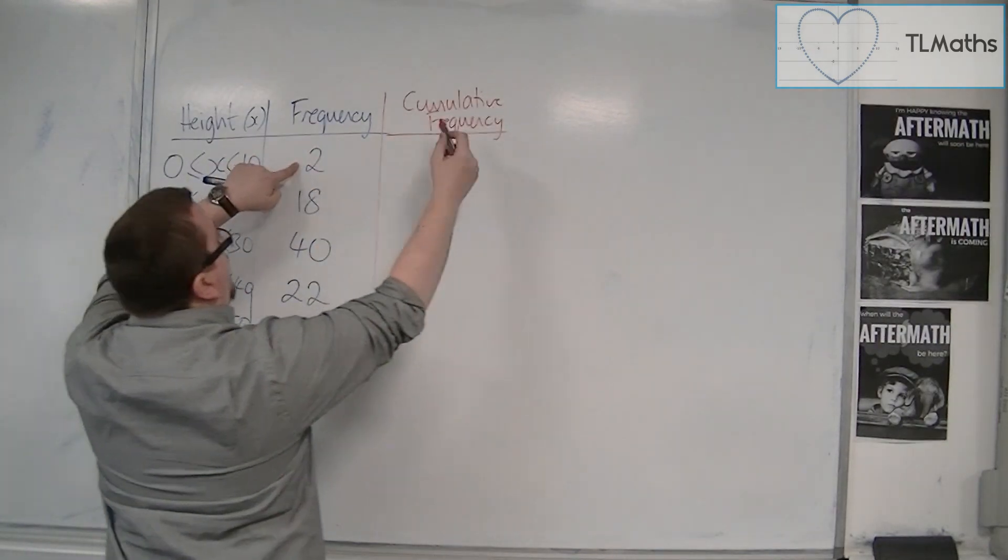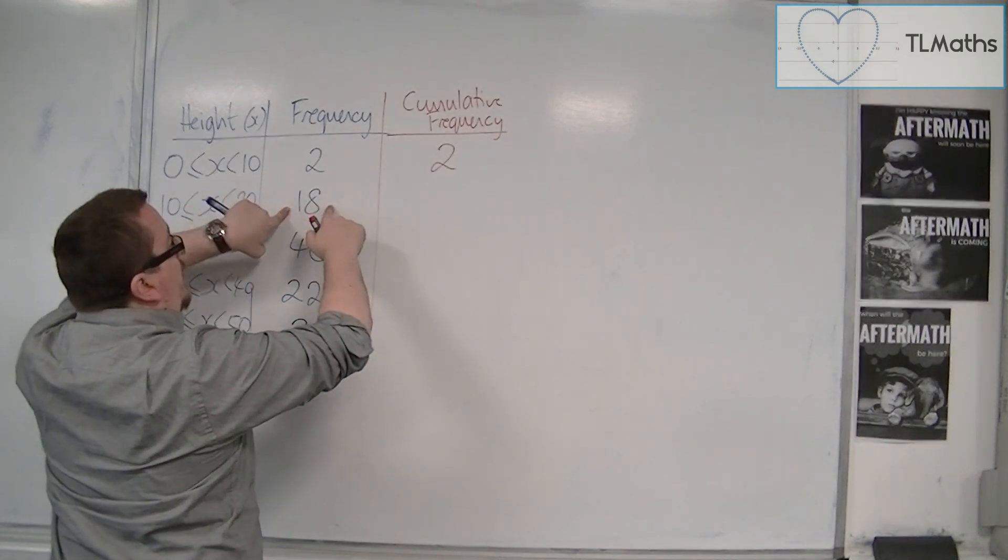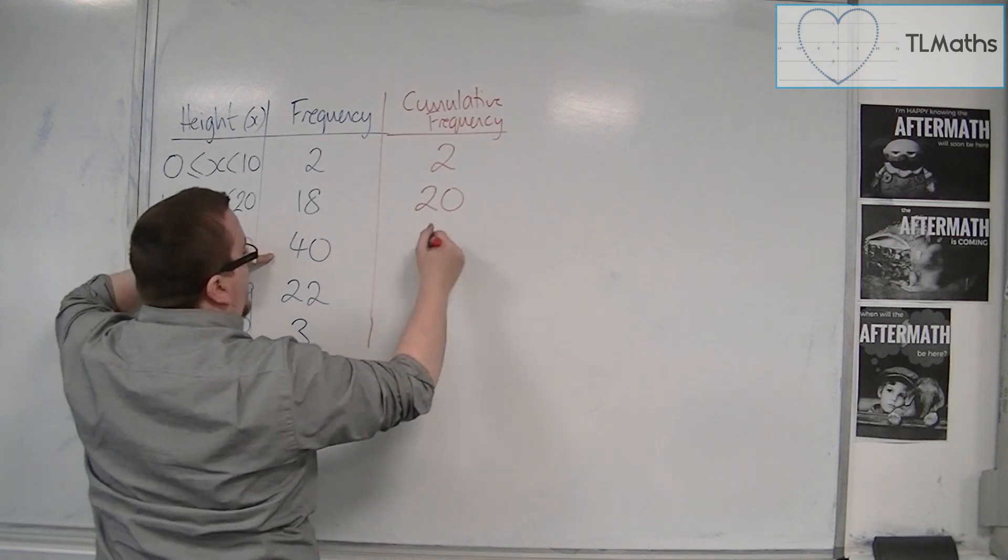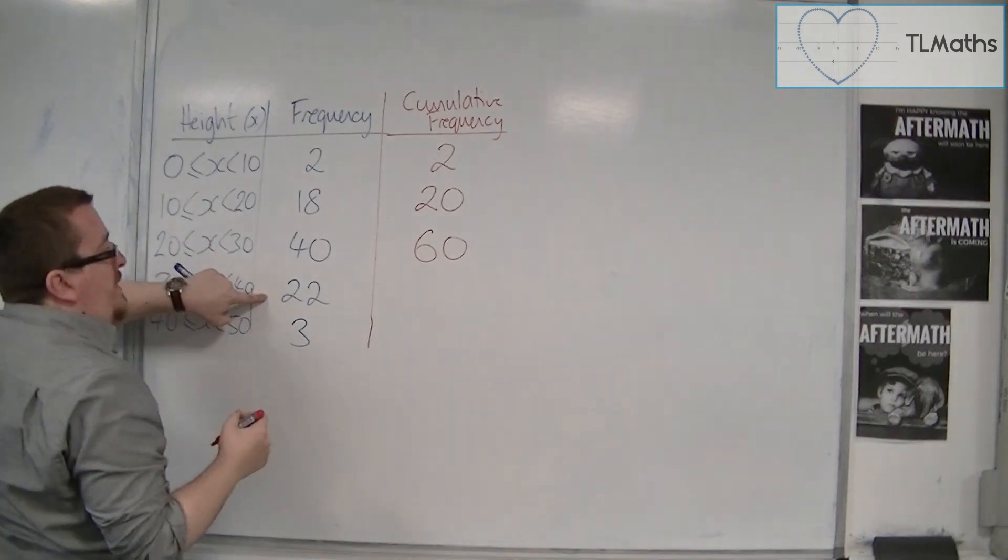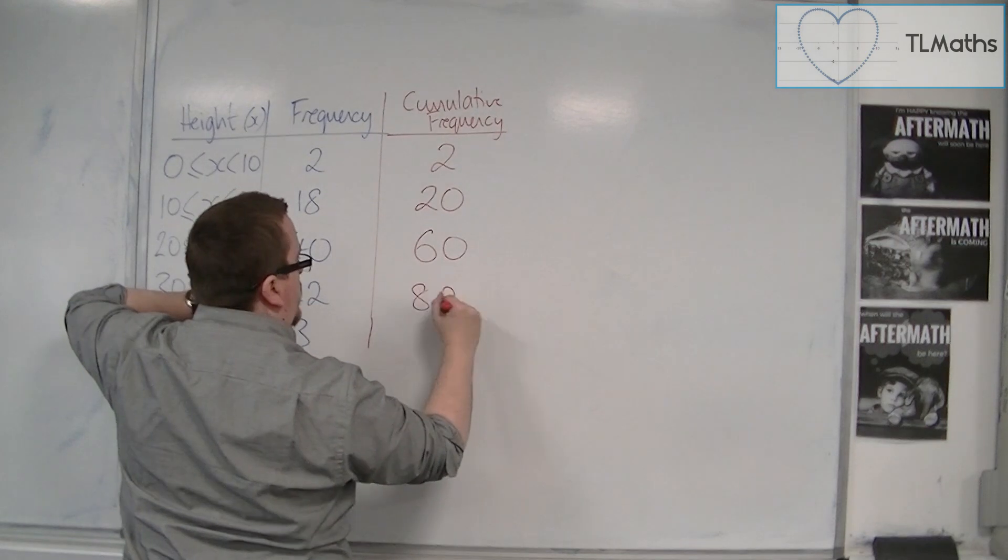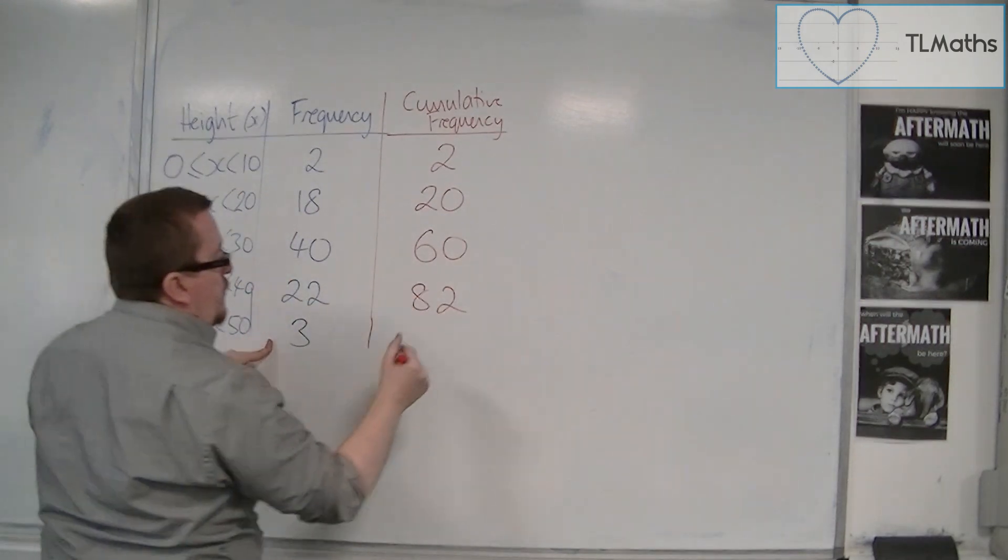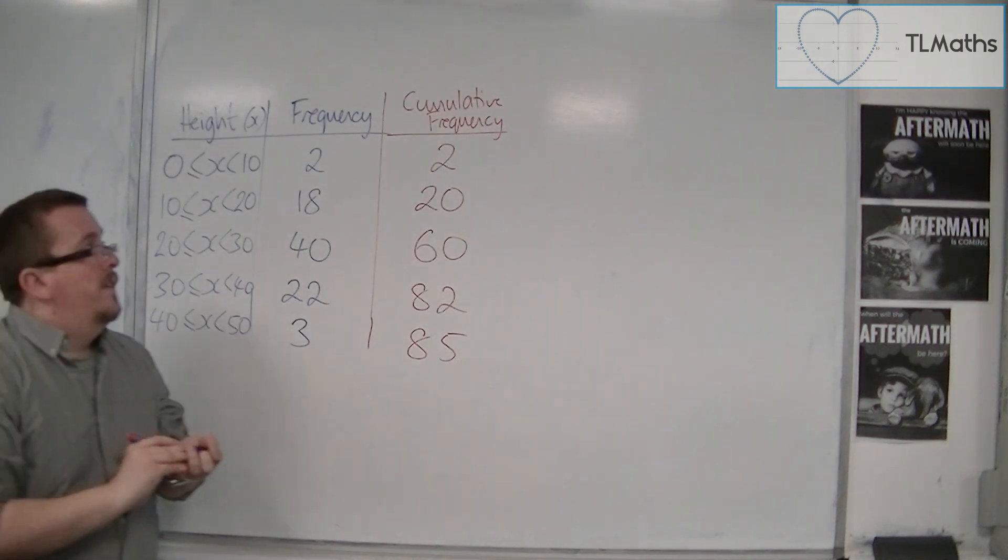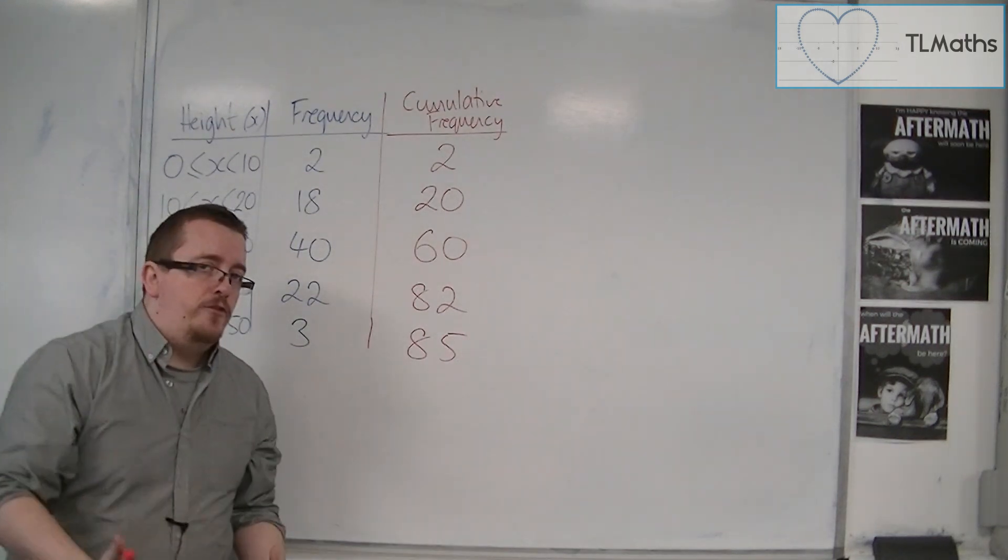You would have the 2, and then you've got 2 plus 18, so then you'd be at 20. And then 20 plus 40, so you'd be at 60. And then 60 plus 22, that'd get me 82. And then 82 plus 3, so I'd have 85. That would be your cumulative frequency.